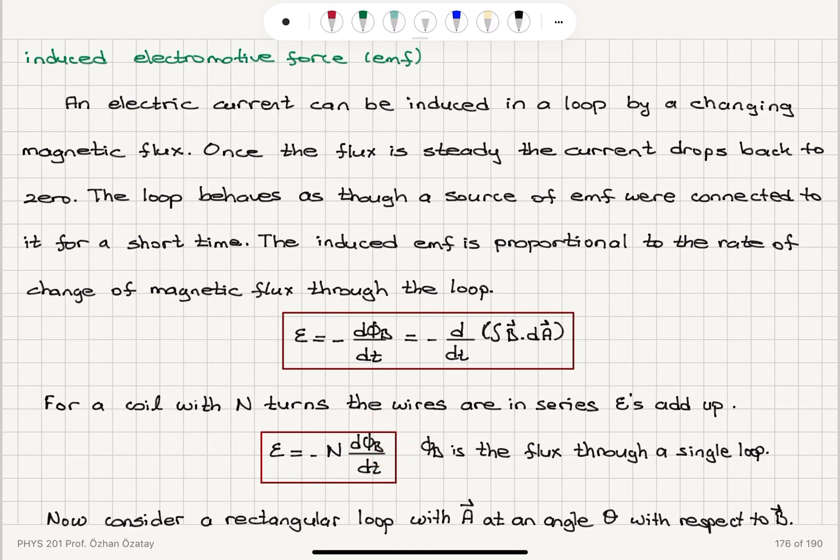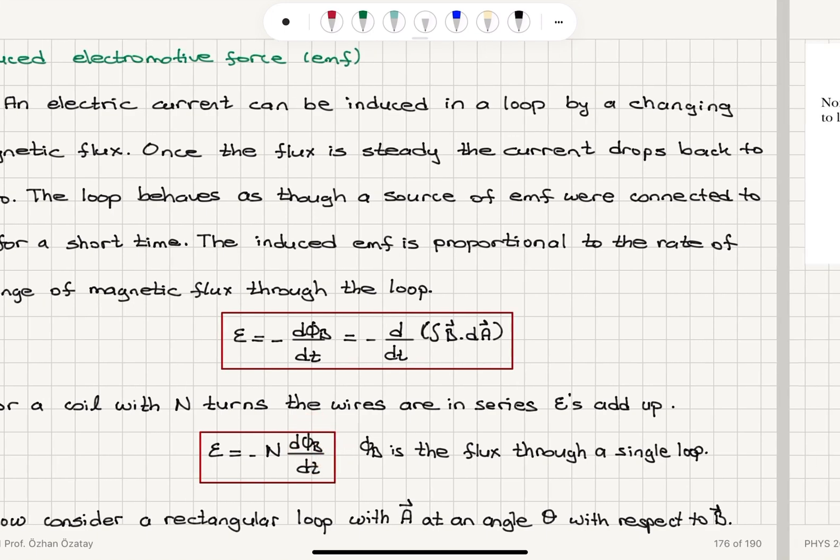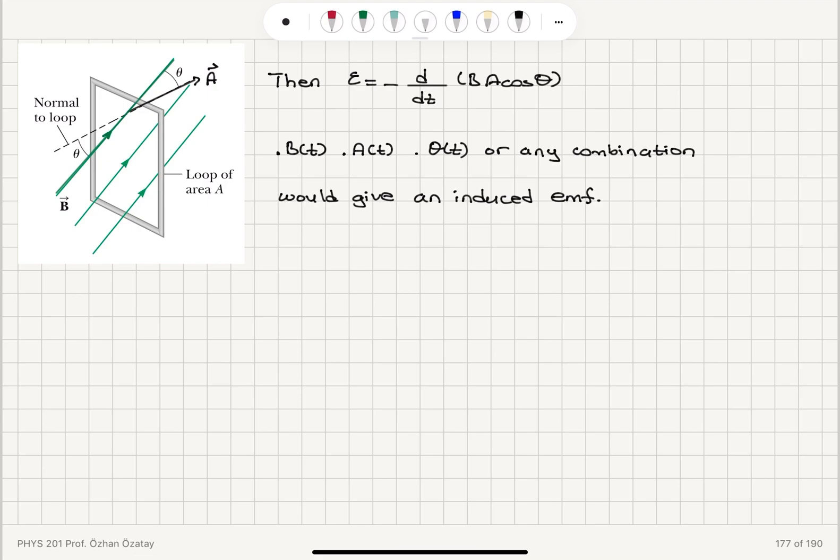When we consider all possible elements of the flux, the magnetic field, area, and the angle between them, if we have time variation in any or any combination of these or any individual components here, we will see an induced EMF.